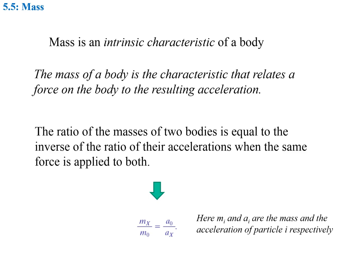Mass is an intrinsic characteristic of a body. The mass of a body is the characteristic that relates a force on the body to the resulting acceleration. The ratio of the masses of two bodies is equal to the inverse of the ratio of their accelerations when the same force is applied — so mass one divided by mass two equals acceleration two divided by acceleration one.